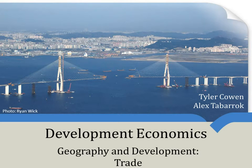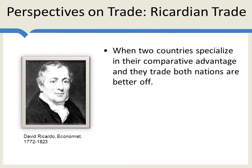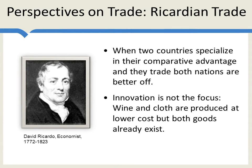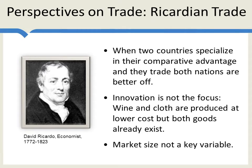This is a big topic, so today we're going to focus on geography and trade. I want to begin by giving two perspectives on trade. The first is the Ricardian perspective. Ricardo said: when two countries specialize in their comparative advantage — that is, they specialize in producing the good which they can produce at lowest opportunity cost — and then they trade, both nations are better off. Notice that innovation is not the focus of Ricardo. There are already two goods, wine and cloth. For Ricardo, trade is about improvements in static efficiency, and market size is really not a key variable.